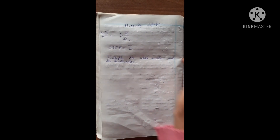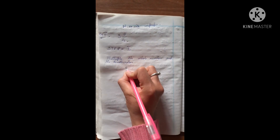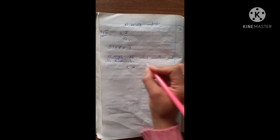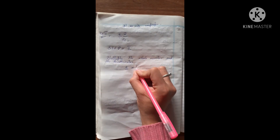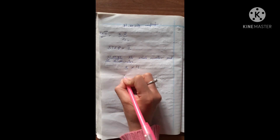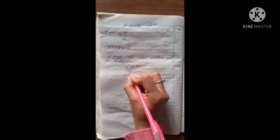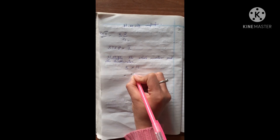Step number one: multiply the whole number and the denominator. The whole number is 3, and the denominator is 4. So if we multiply both, we get 12.